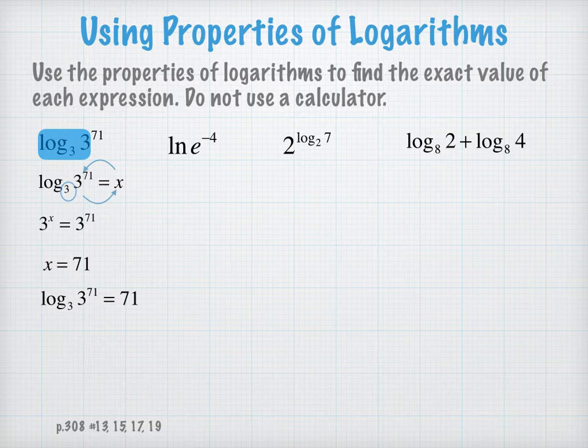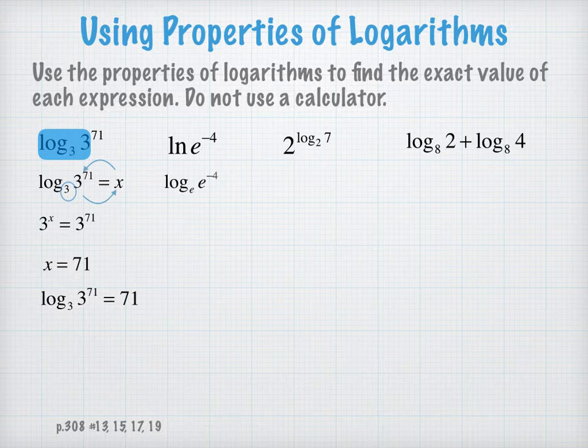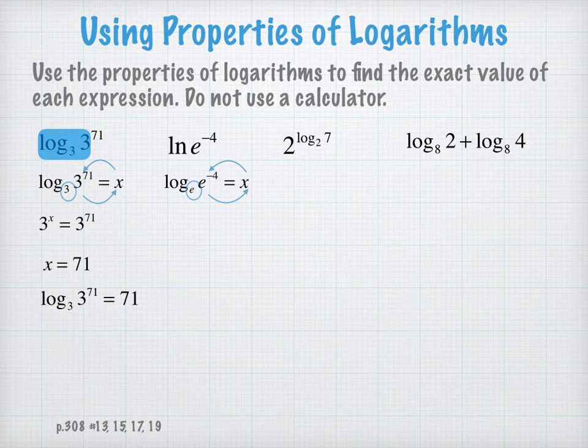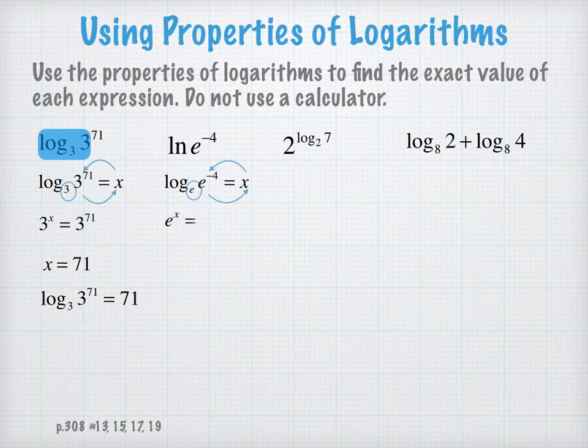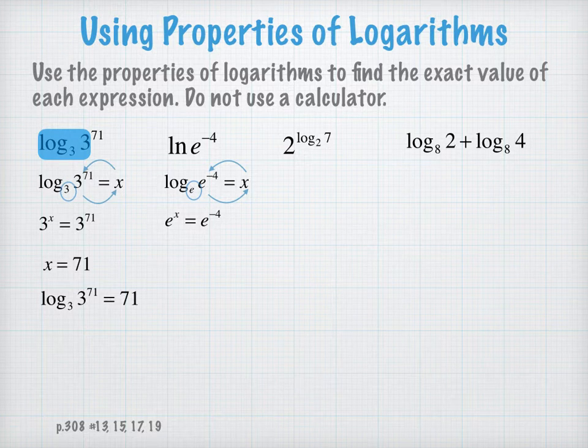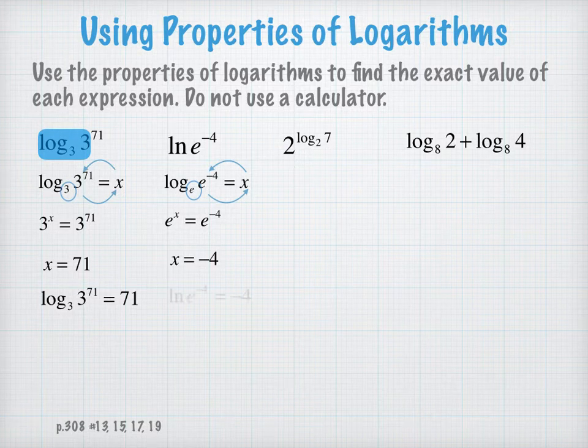We'll rewrite the ln, or the natural log, as log to the base e. We'll observe our logarithmic structure and rewrite this as an exponential equation: e to the x equals e to the negative 4. Because our bases are equal, then our exponents will also be equal. So ln of e to the negative 4 equals negative 4.